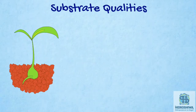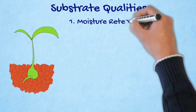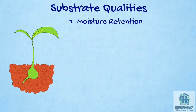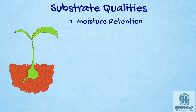Next, we will mention the general properties that a good substrate must have. The first one is moisture retention. It determines the possibility that the plant has nutrients available so that they can carry out these metabolic processes. For this moisture retention to be available, it will depend a lot on its granulometry and porosity. The higher the water retention capacity of the substrate, the less frequent the irrigations will be.